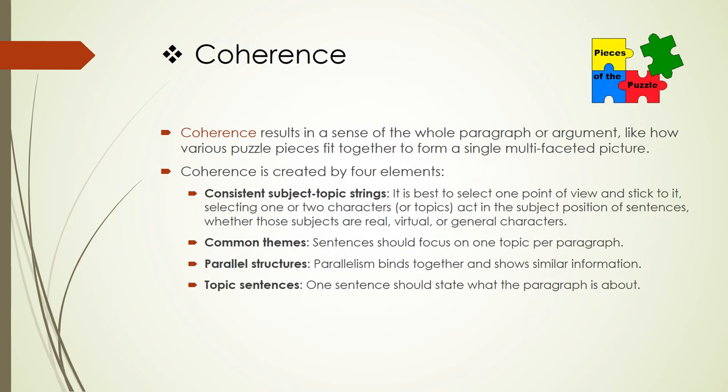Our second key term is coherence. Coherence results in a sense of the whole paragraph or argument, like how various puzzle pieces fit together to form a single, multifaceted picture. Coherence is created by four elements. First, consistent subject-topic strings: select one point of view and stick with it, choosing one or two characters or topics in the subject position of sentences. Second, common themes: sentences should focus on one topic per paragraph. Third, parallel structures: parallelism binds together and shows similar information. Fourth, topic sentences: one sentence should state what the paragraph is about. And perhaps fifth, avoid distractions like metadiscourse or getting off topic.